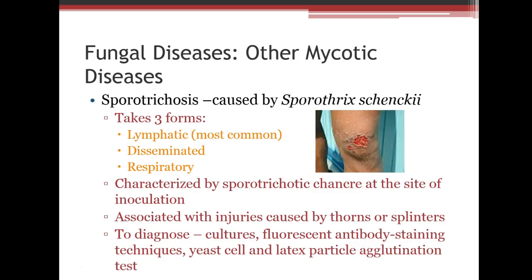Sporotrichosis, caused by Sporothrix, takes three forms: lymphatic, disseminated, or respiratory. It starts with a sporotrichotic chancre at the site of inoculation. It's known as the rose thorns disease because scratching yourself on a rose thorn can cause this infection. Diagnosis is made by culture, fluorescent antibody staining, and latex agglutination.